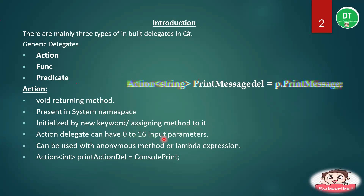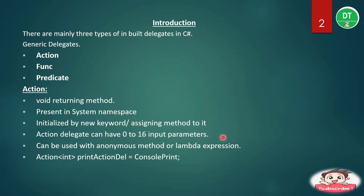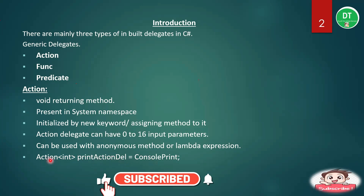The Action delegate can have 0 to 16 input parameters, meaning it has 16 overloads. It can be used with a named method, an anonymous method, or a lambda expression — all can be assigned to the delegate object. Here I have given an example of the Action delegate. I am writing Action, then specifying the parameter type. Since Console.Print takes one integer parameter, I have given int here, and the delegate object is named printAction.